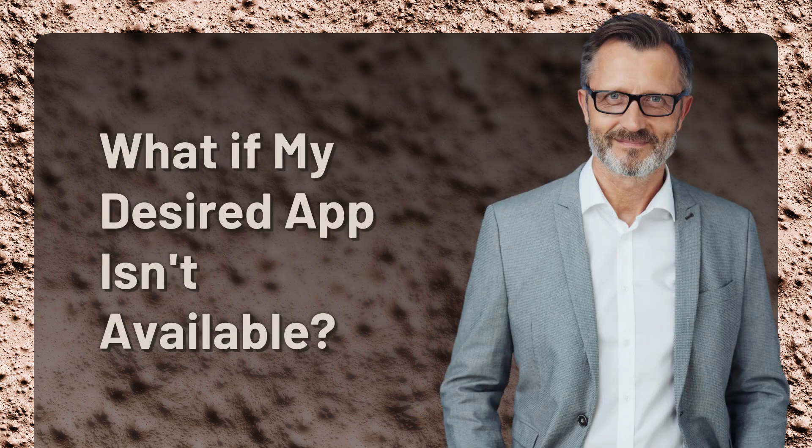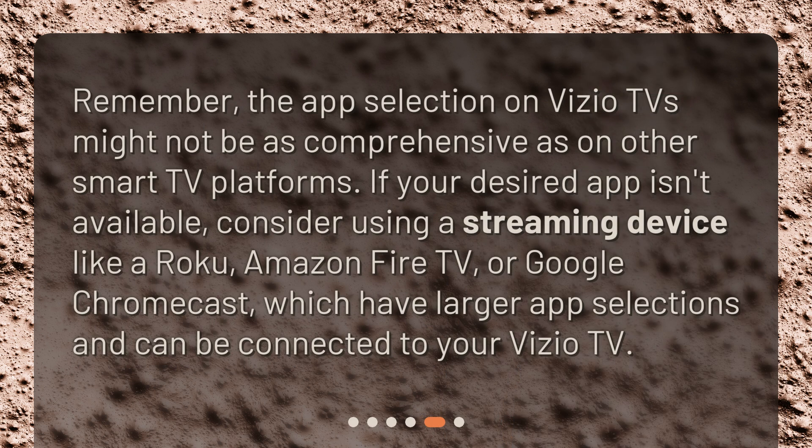What if my desired app isn't available? Remember, the app selection on Vizio TVs might not be as comprehensive as on other Smart TV platforms. If your desired app isn't available, consider using a streaming device like a Roku, Amazon Fire TV, or Google Chromecast, which have larger app selections and can be connected to your Vizio TV.